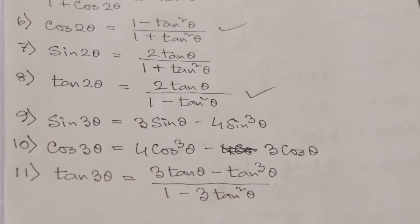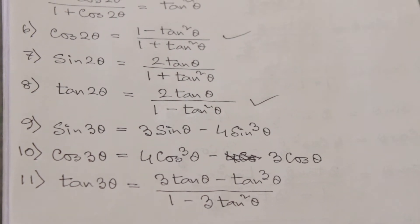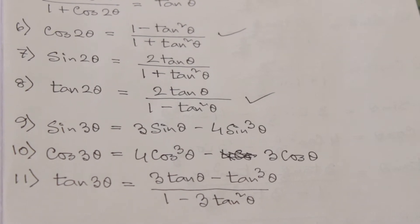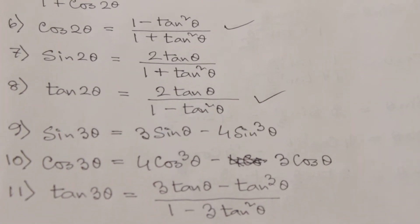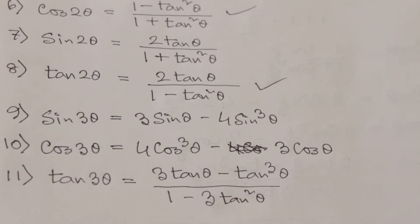Number 9 is sin 3θ which equals 3 sin θ minus 4 sin³θ. Cos 3θ is 4 cos³θ minus 3 cos θ. And the last one is tan 3θ which equals (3 tan θ minus tan³θ) divided by (1 minus 3 tan²θ).